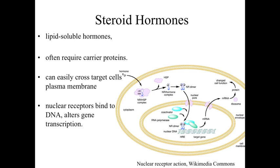Peptide hormones generally bind to receptors on the plasma membrane surface and activate a second messenger system. Steroid hormones, though, tend to cross the plasma membrane, get into the cells — in many cases into the nucleus — and interact with nuclear receptors. The steroid hormone often complexes with something that binds to DNA, and by binding to the DNA it directly alters gene transcription. So steroid hormones have a different target and a different effect than traditional peptide hormones.